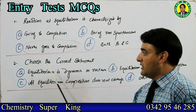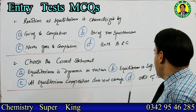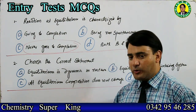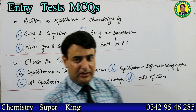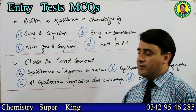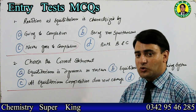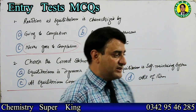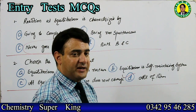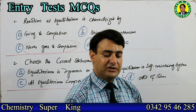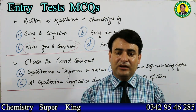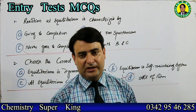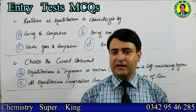Choose the correct statement: equilibrium is dynamic in nature; equilibrium is a self-maintaining system; equilibrium composition does not change; or all of them. Options A and C are definitely correct. Since there is an 'all of them' option, the answer is all of them. Also remember: equilibrium is a self-maintaining system. So if two options are clearly correct and 'all of these' is available, go with that. These were the equilibrium-related details for today.